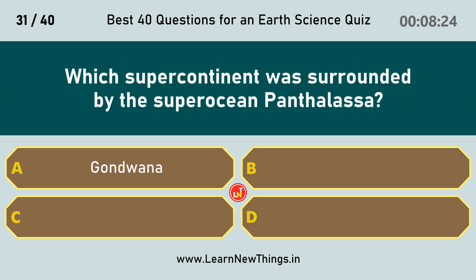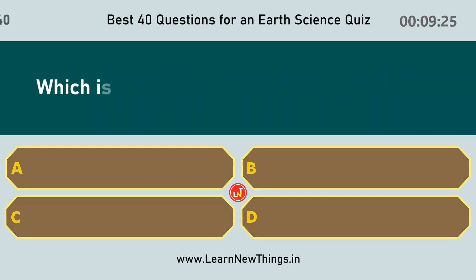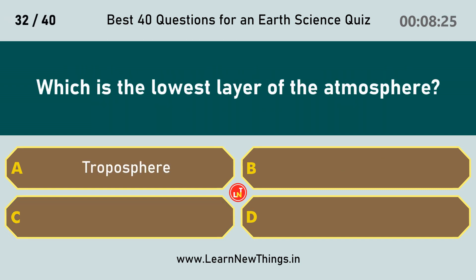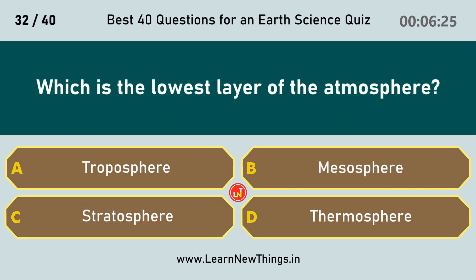Which supercontinent was surrounded by the superocean Panthalassa? Pangea. Which is the lowest layer of the atmosphere? Troposphere.